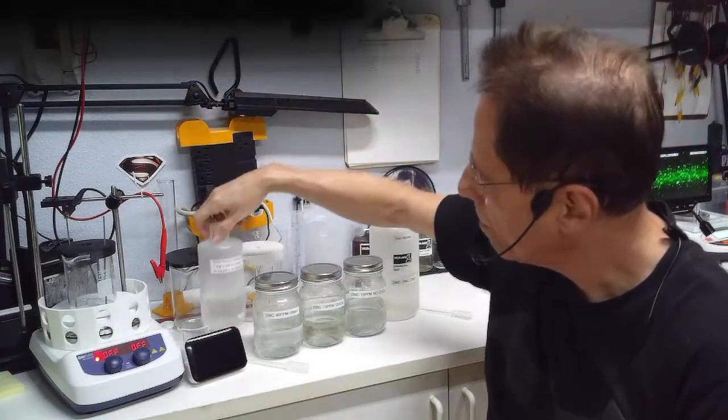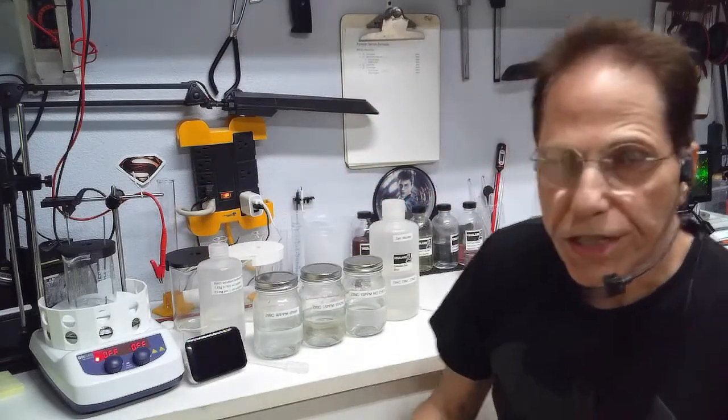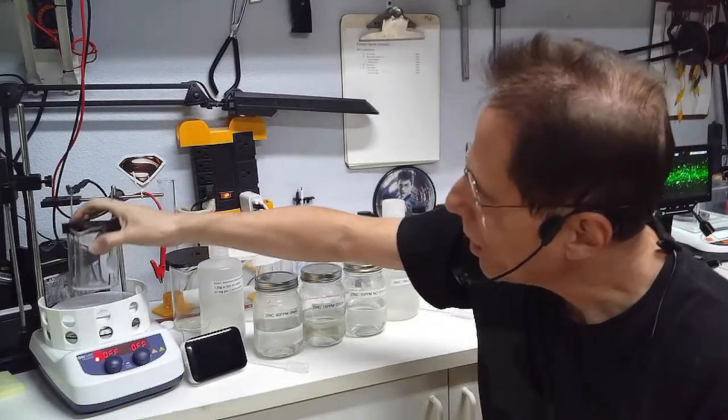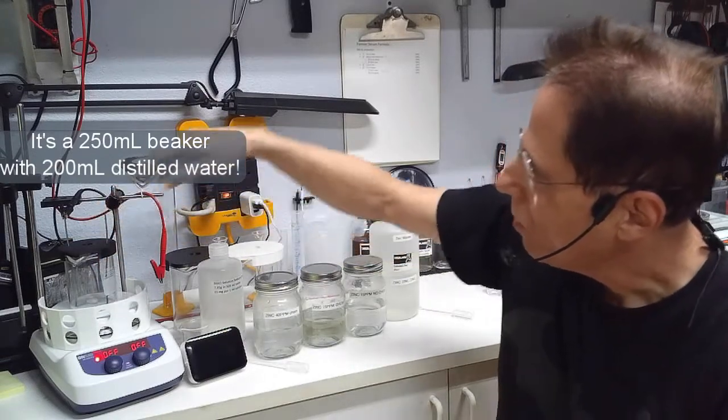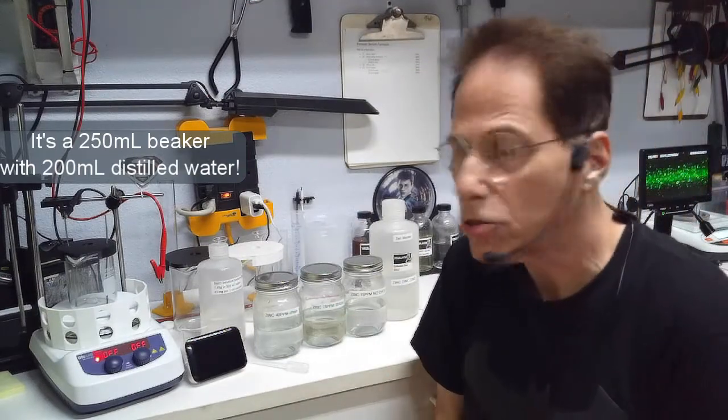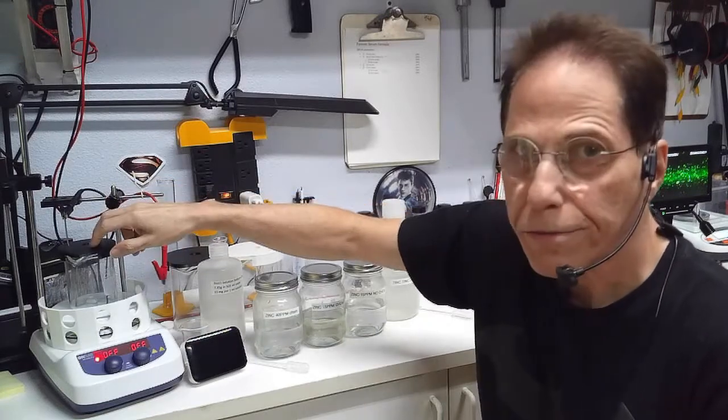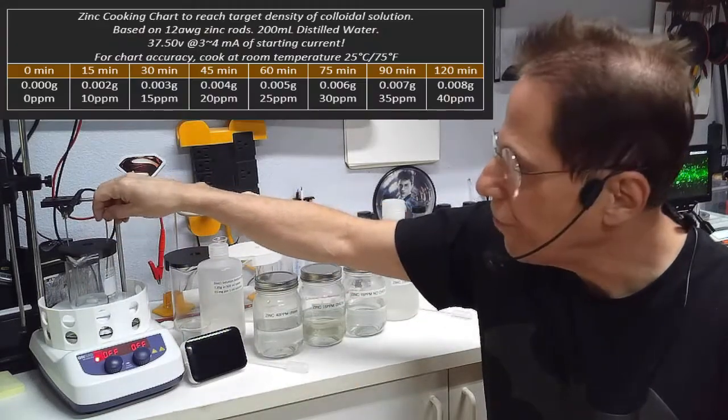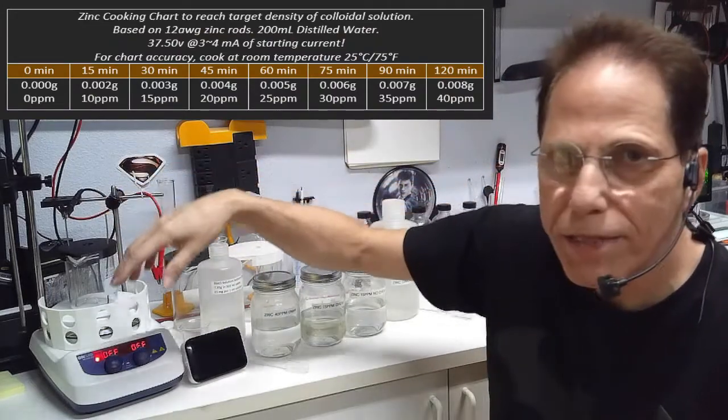This is what this looks like. This solution is going to be needed to make the colloidal zinc. So you're going to fill your beaker. Now this is a small beaker, 250 milliliters. The only reason I did that was because I have a whole lot of zinc here, really didn't need to cook too much zinc.